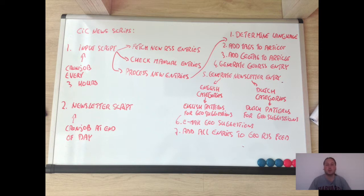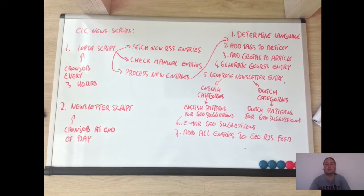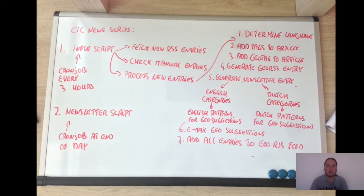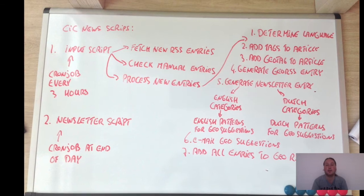For those who don't know what cron is: a cron job is a scheduler in Unix to schedule tasks concerning time or day, etc. The input script runs every three hours and the newsletter script runs at the end of the day.